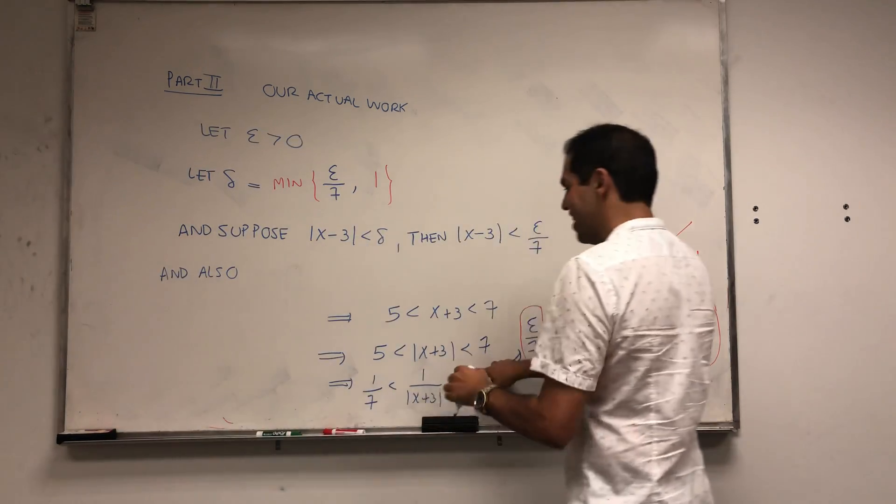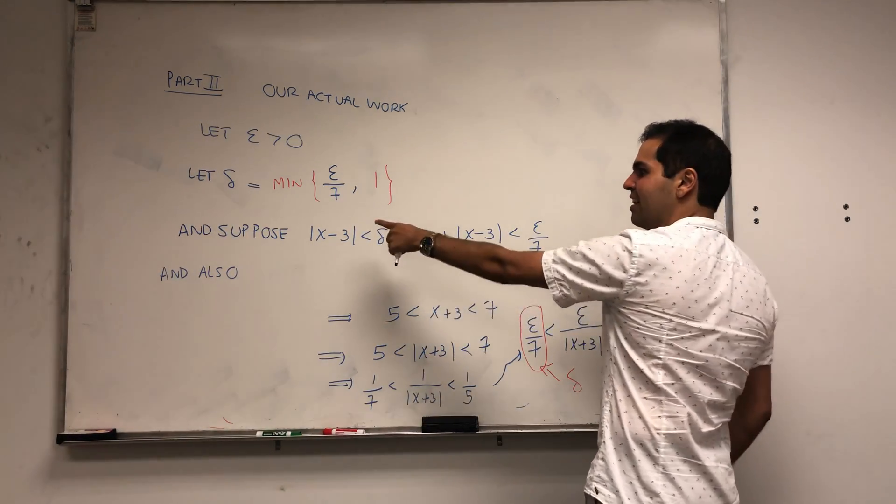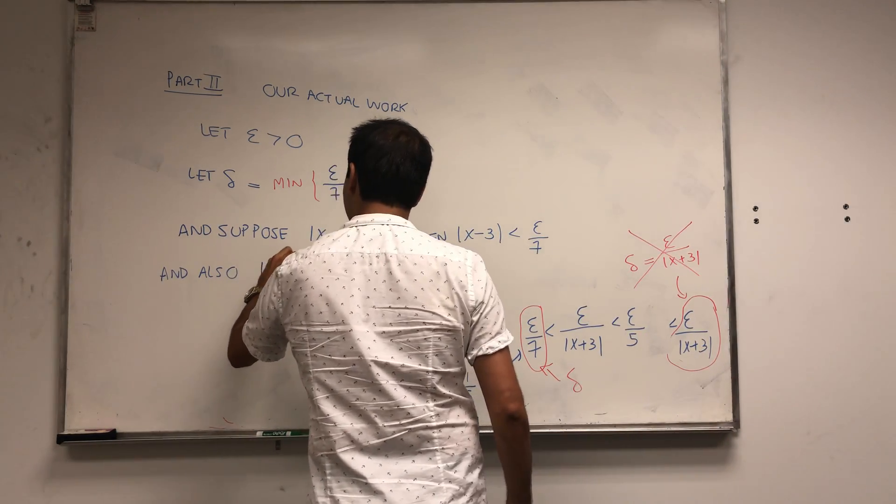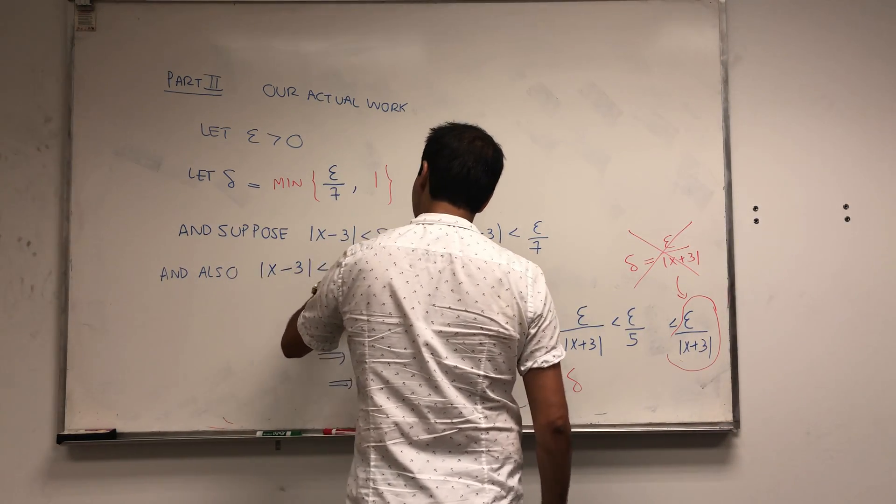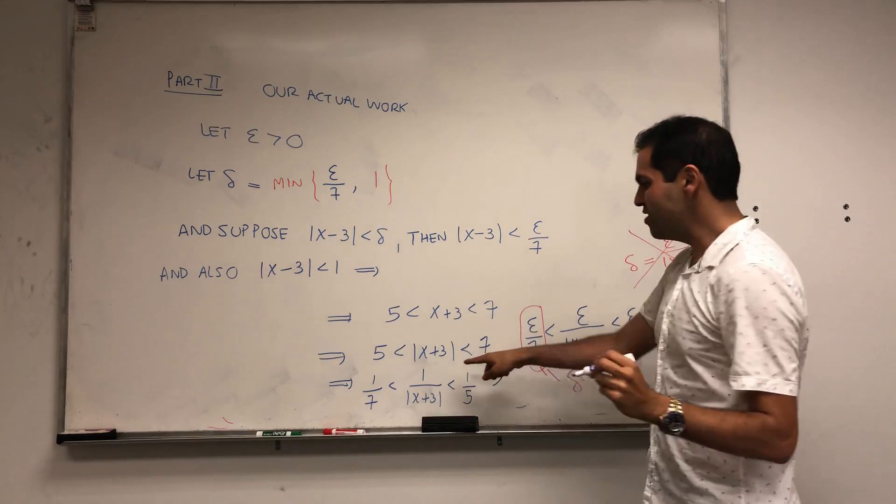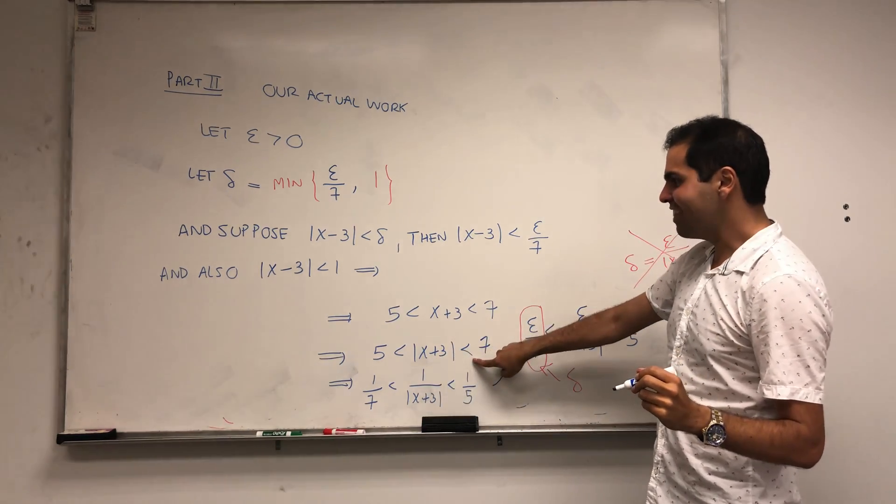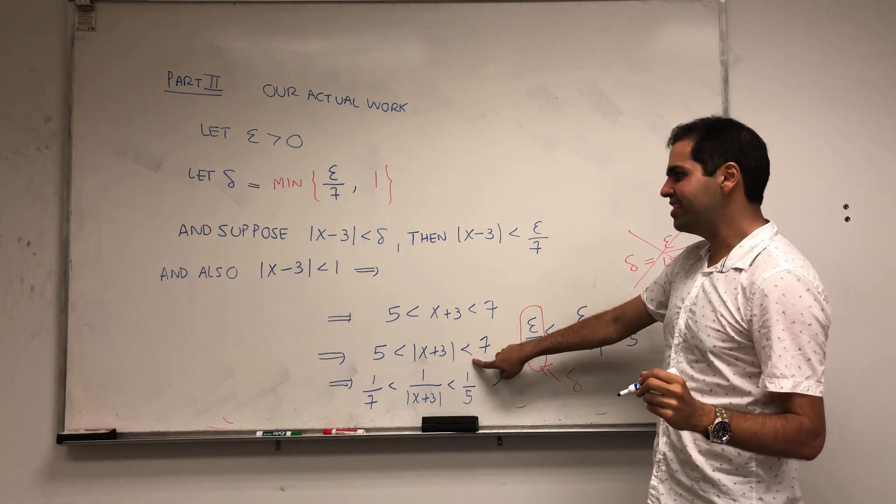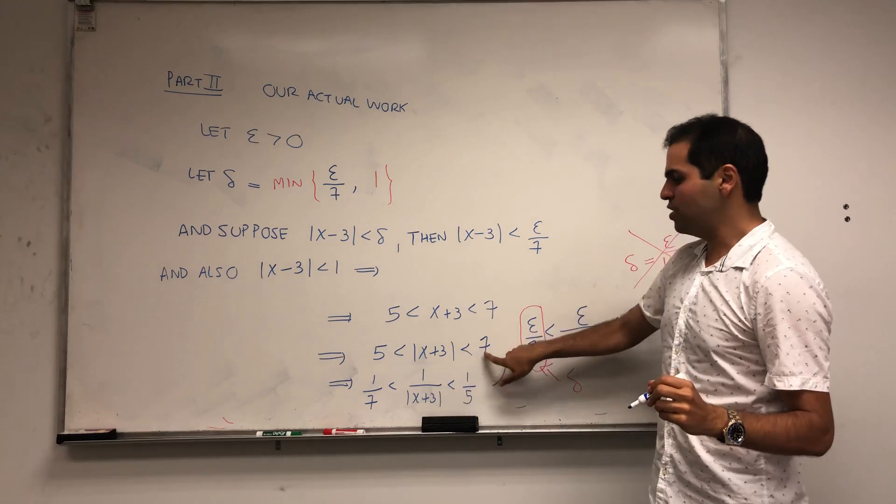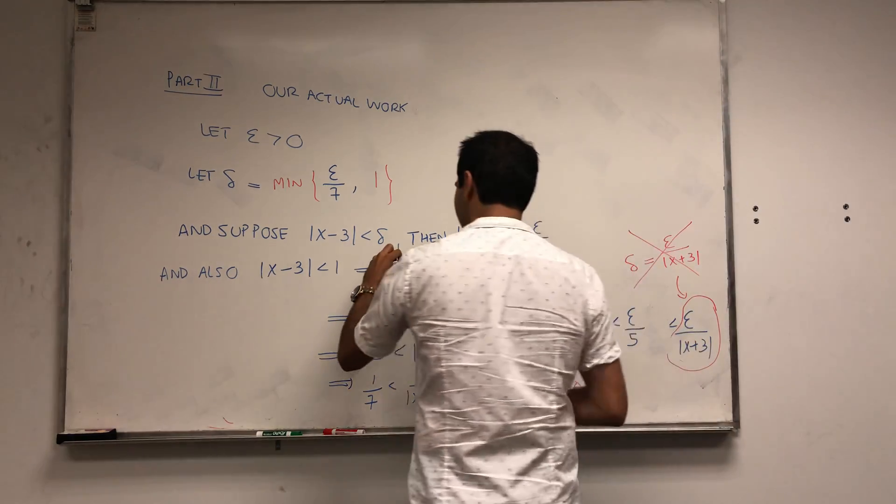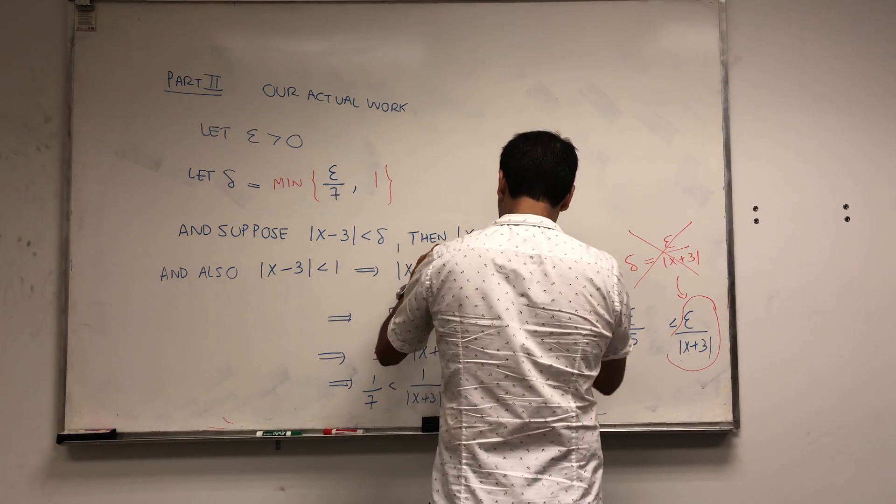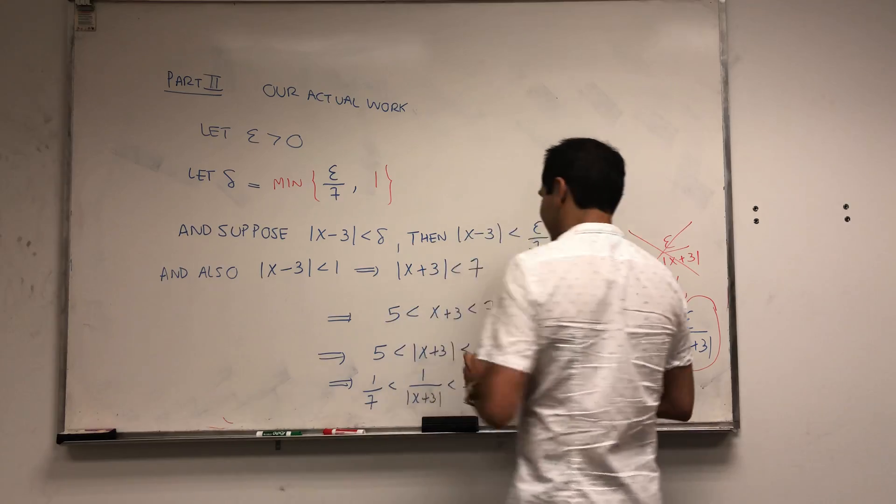Notice what we had here. Also, x minus 3 is less than 1. From our work before, we found that if x minus 3 is less than 1, x plus 3 is less than 7.